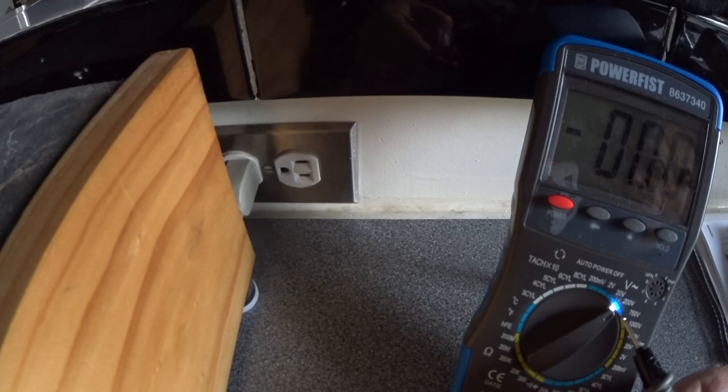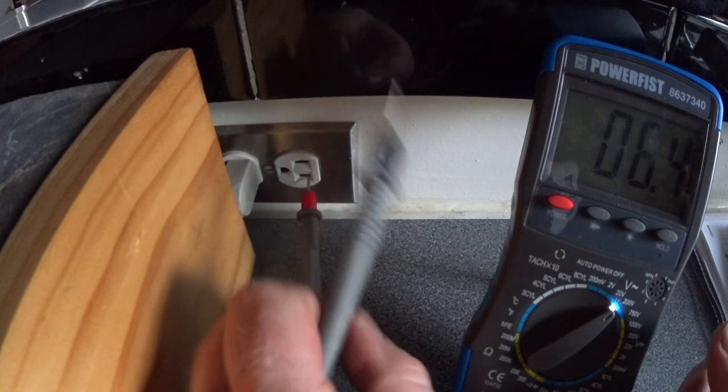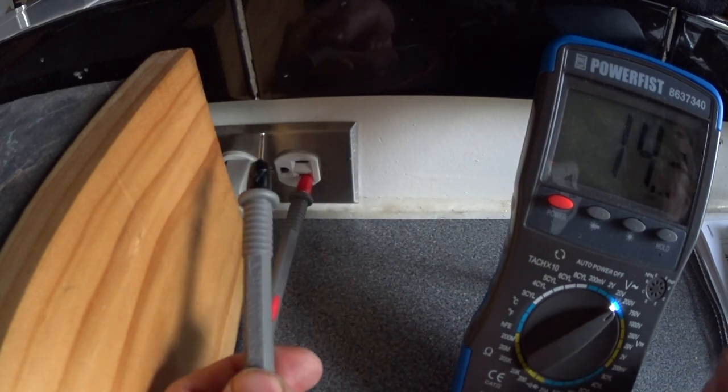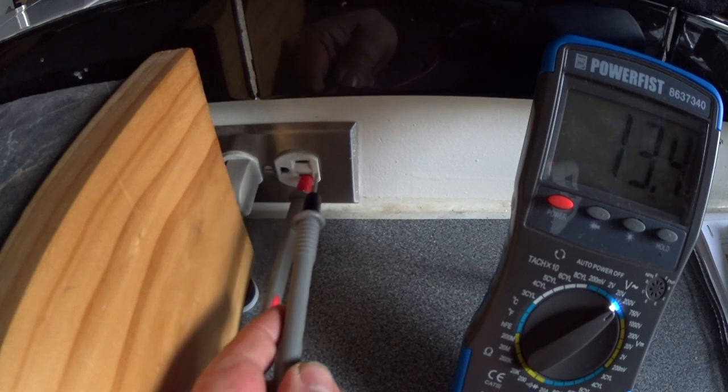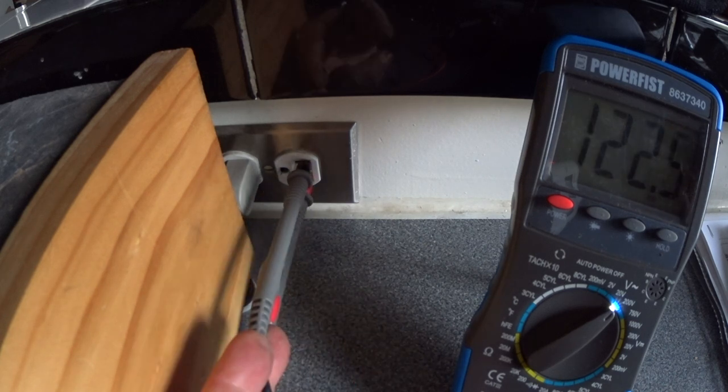So, switch the dial to measure AC volts for this next test, then place the red probe in the smallest hole. The black probe can find ground through the neutral terminal or through the ground pin.